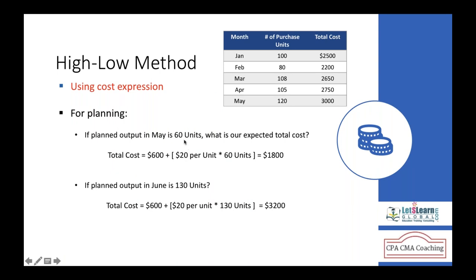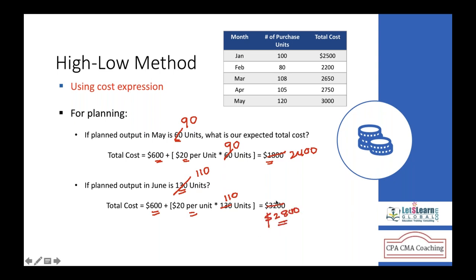What would be the total cost at different activity levels? For 90 units: $600 + $20 × 90 = $2,400. For 110 units: $600 + $20 × 110 = $2,200 + $600 = $2,800. This way you can estimate the total cost for any given activity level within the relevant range.